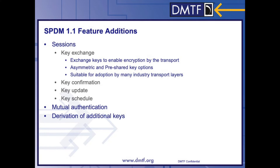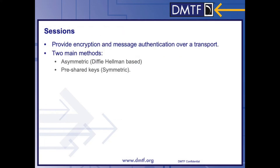The new features are SESN, Mutual Authentication, and Derivation of Keys. SESN provides encryption and message authentication for any data traversing a transport. There are two main methods: asymmetric and pre-shared keys. The asymmetric method is Diffie-Hellman-based, and pre-shared keys are symmetric-based.